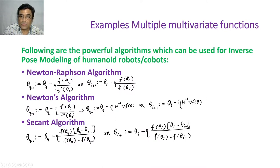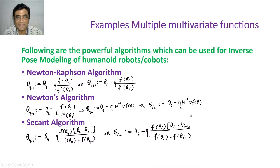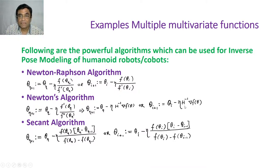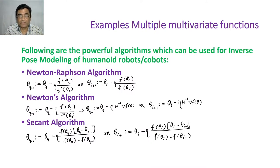We are keeping eta as a control parameter — you can call it a hyperparameter — so that the iteration will be in your control and near the derivative-zero value. And when the Hessian matrix will be singular, that means when the manipulator will be in a singular configuration, you can avoid those situations using this control parameter.